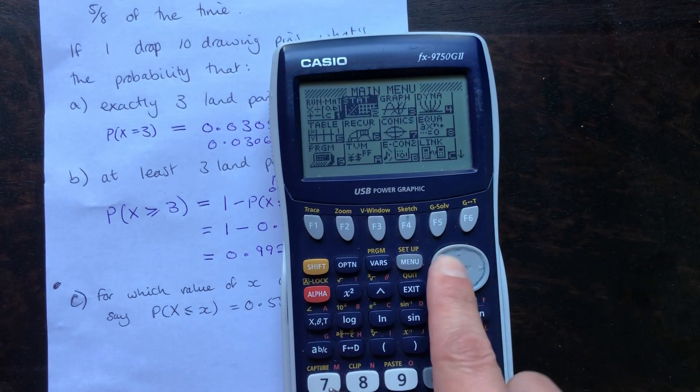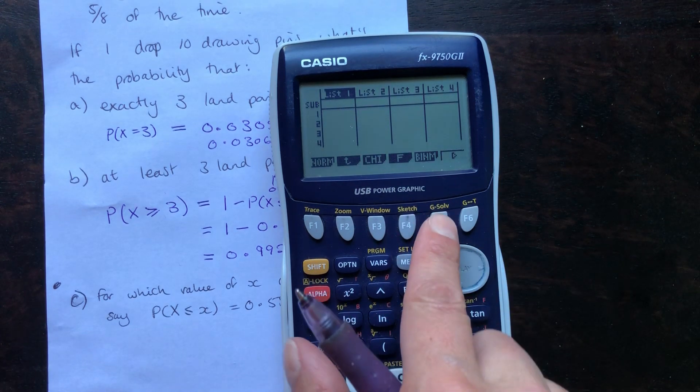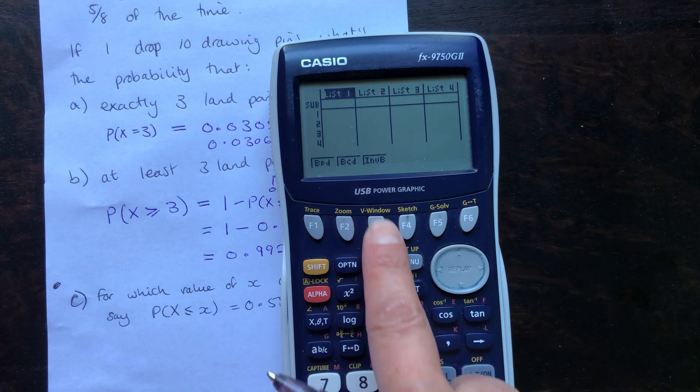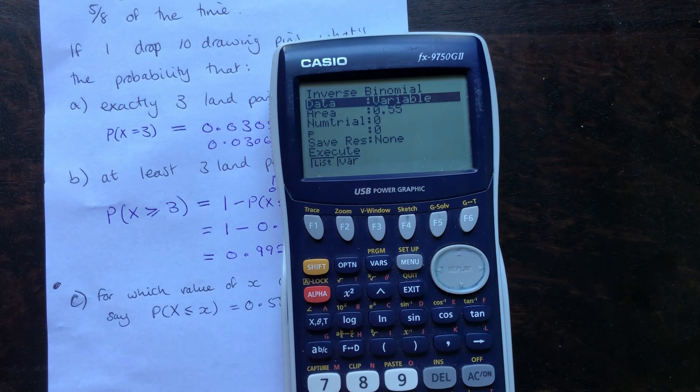We're in the stats menu again, that second one there. We're going for binomial. This time we're going to use this option for inverse binomial under F3 because we're working backwards.